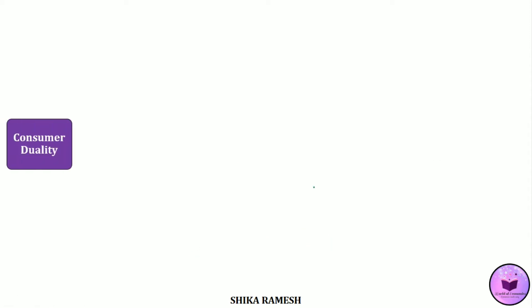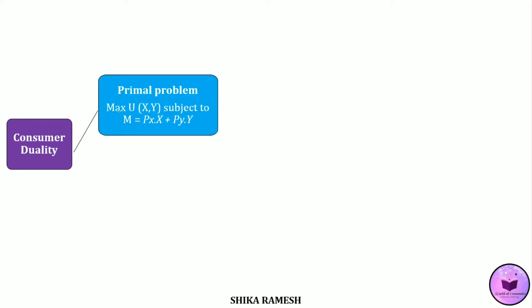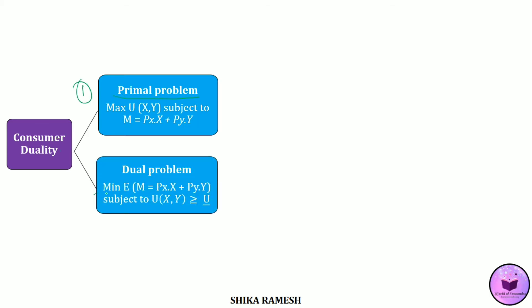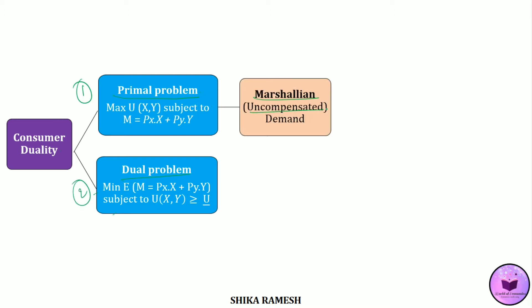If we look at this flowchart, we can see that consumer duality means two problems: maximizing utility subject to a budget constraint, which is the primal problem, and minimizing expenditure subject to a utility constraint, which is the dual problem. This primal problem is also known as Marshallian demand or uncompensated demand, whereas the dual problem is also known as Hicksian demand or compensated demand.